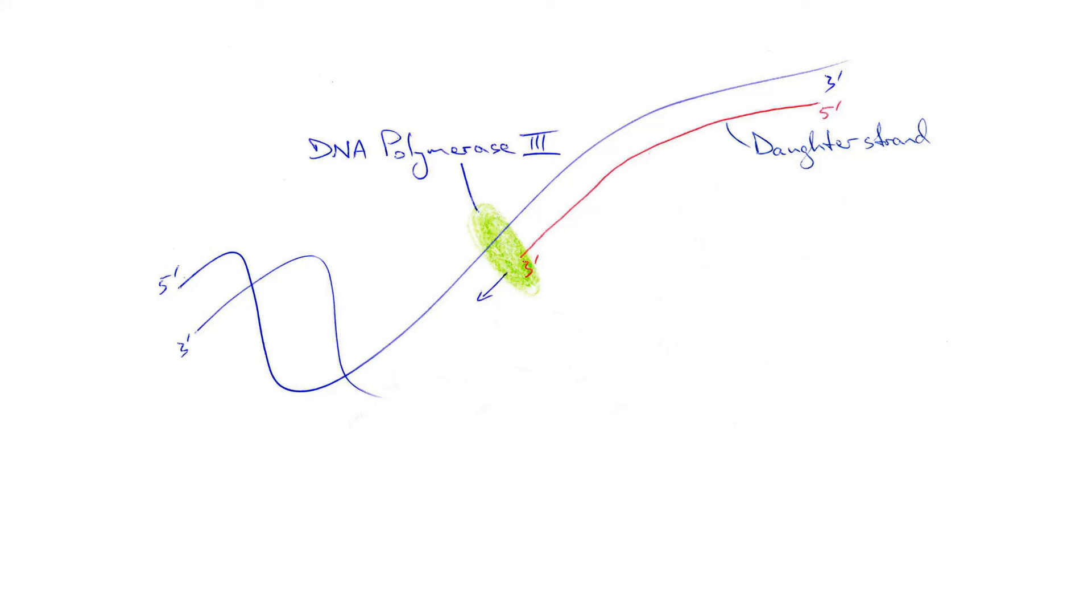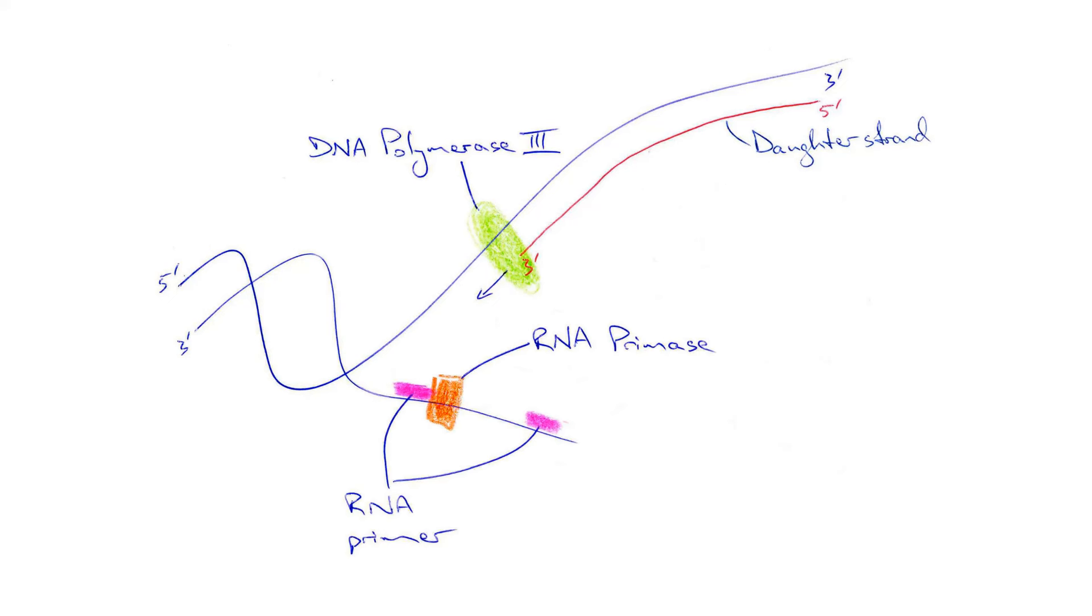However, DNA polymerase 3 can't just start adding nucleotides wherever it wants. A primer is needed to begin synthesis. RNA primase gives DNA polymerase 3 an RNA primer from which to start synthesizing the daughter strand.